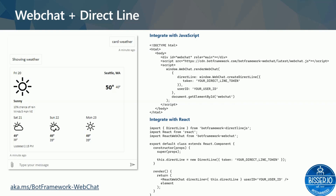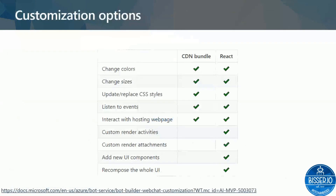In terms of customization, the basic out-of-the-box look is all black and white. The web chat component lets you change various colors, sizes, and even use your own CSS styles. With the React component, you can do even more — you can add custom render activities, add new UI components, and basically recompose the whole UI to fit your needs.